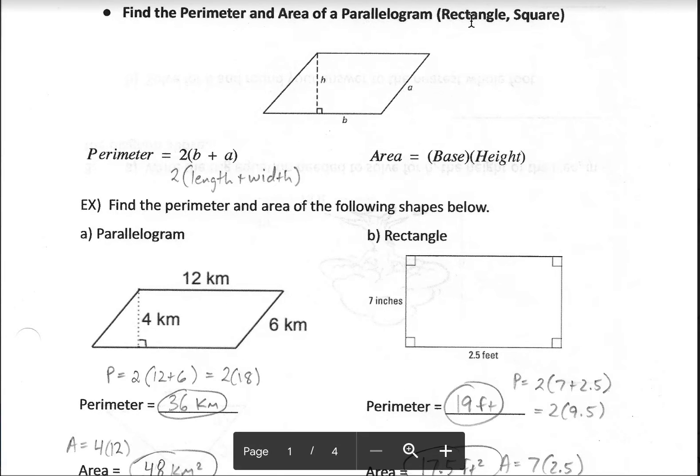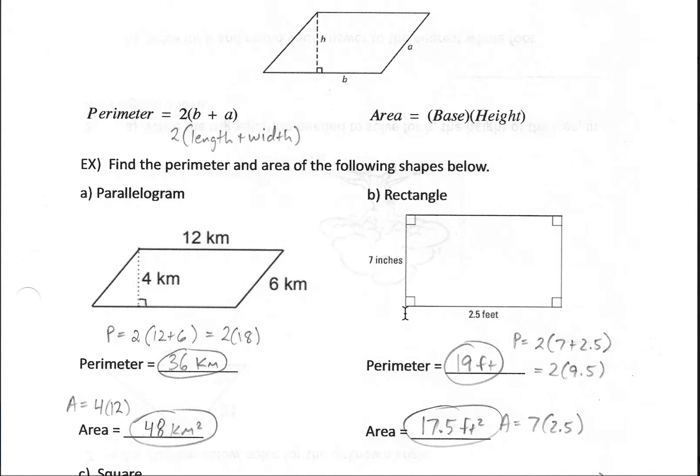When we get into our special types of parallelograms, like the rectangle or the square, a unique thing happens in that the base and the height end up being the length and the width. So we can simplify our formulas here to just be, for our area, base times height, or length times width. And for our perimeter, we could say it's the length plus the width doubled.